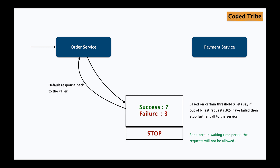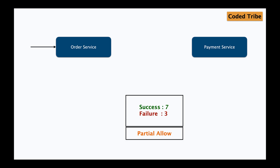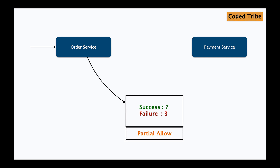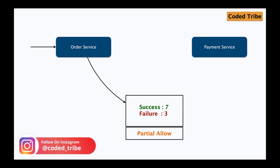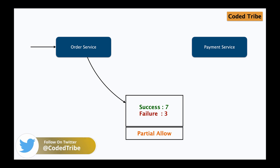Instead of forwarding the request, the interceptor stops it and returns a default response. Since 30 percent of previous transactions failed, the request interceptor now blocks all requests to the payment service for a certain configured time period. After that predefined wait period is over, the request interceptor switches to a partial-allow mode — it allows only a few requests out of, say, 10 (maybe 3 or 4) to go to the payment service just to check whether it is up again, while returning the default message for the rest. If the payment service is still down, those threads get a timeout or unsuccessful response and the interceptor goes back to the blocking stage.